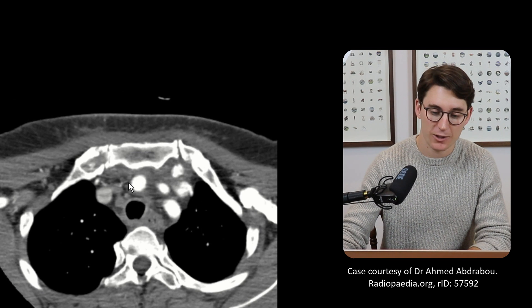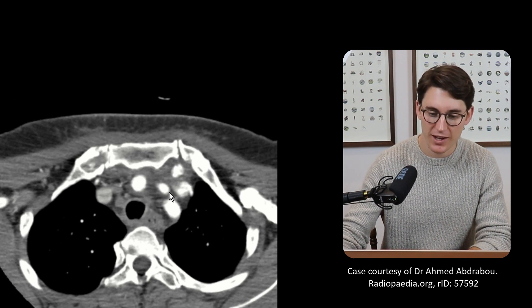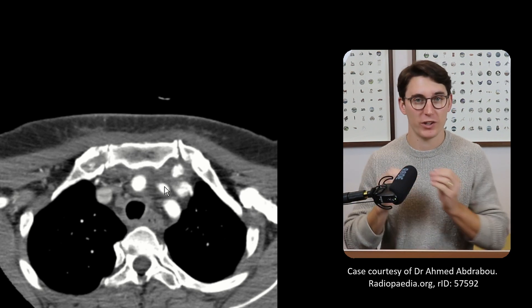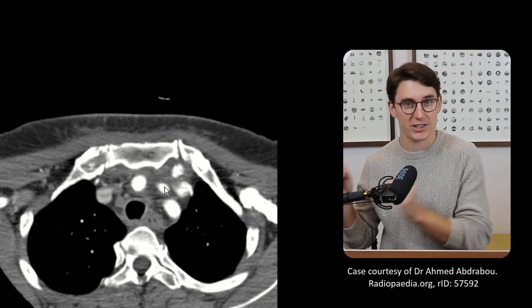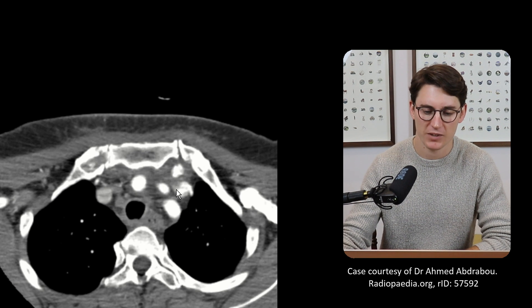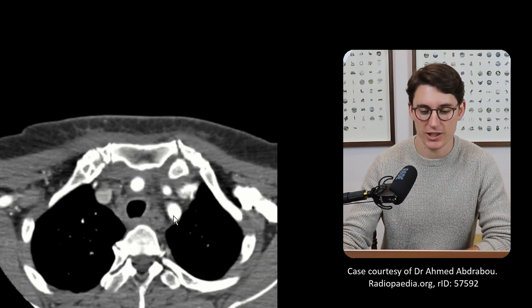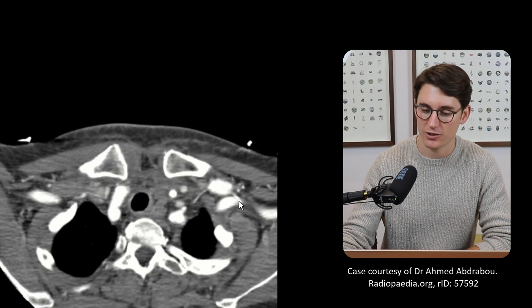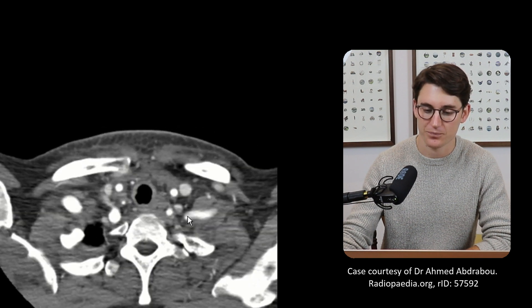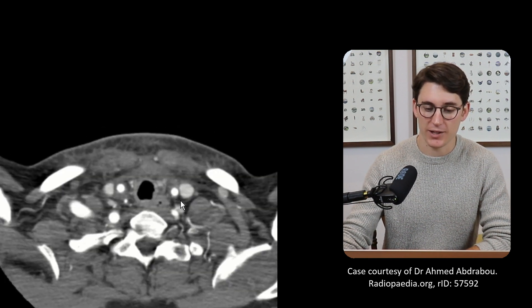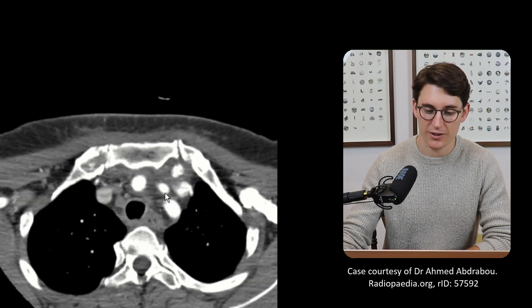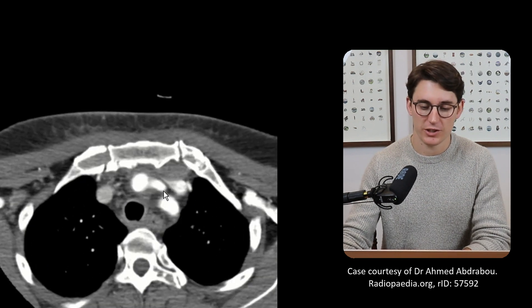So let's name them: the brachiocephalic trunk, our left common carotid — and just to note, there's no such thing as just 'a carotid artery'; it's either common carotid, internal carotid, or external carotid artery — and then our left subclavian. Let's just confirm this is our left subclavian — we should see it going out towards the periphery. And as we come down, we can see our left subclavian, then we know that this is our left common carotid artery.